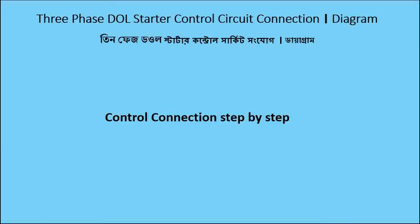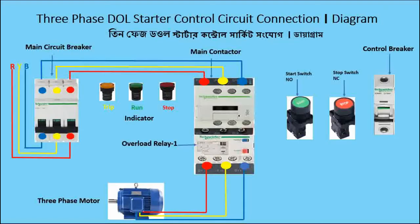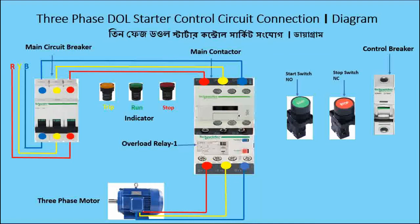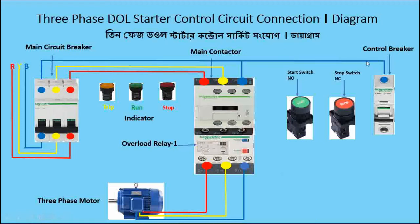This is the main power control connection. Now I go for the control connection step by step. First I want to connect the main contactor to the control breaker — you can see there: main contactor and the control breaker with a loop connection. Then control breaker connects to the overload relay.